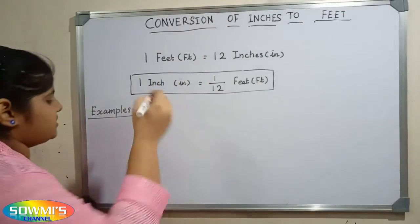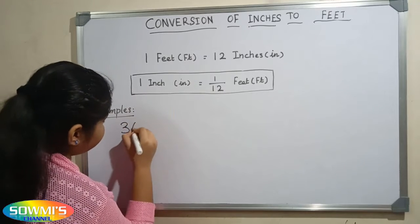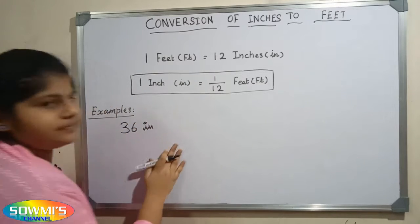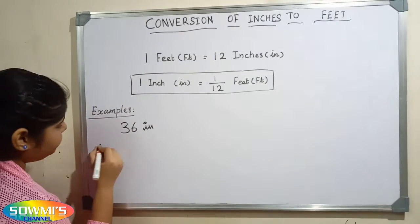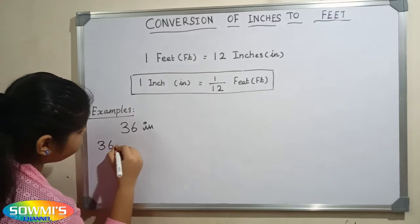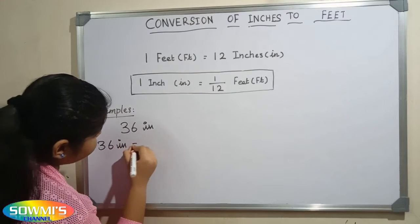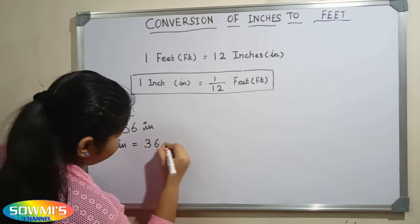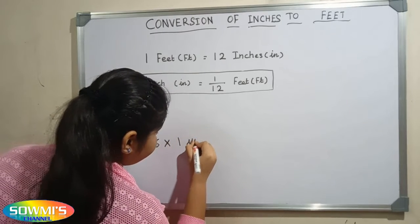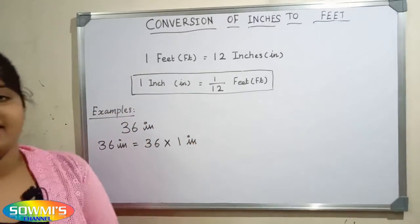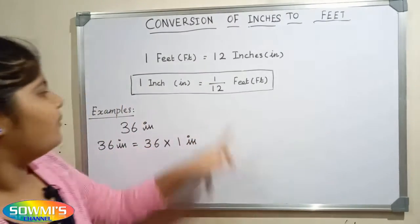So 36 inches. 36 inches is equal to 36 multiply 1 inch. Now we have to substitute 1 by 12 feet in the place of 1 inch.